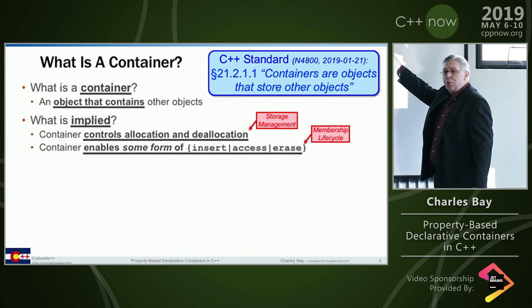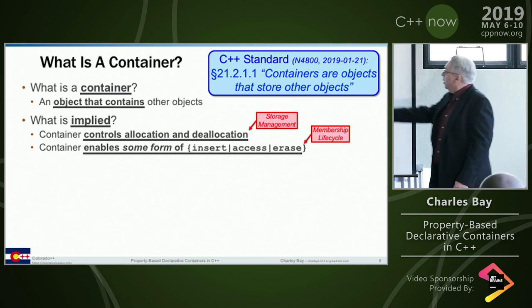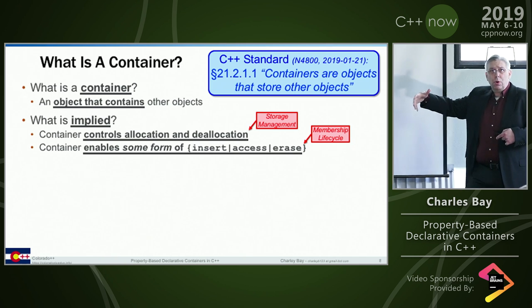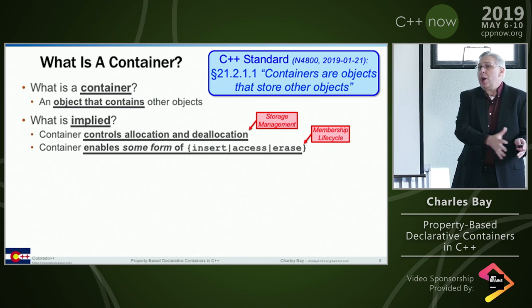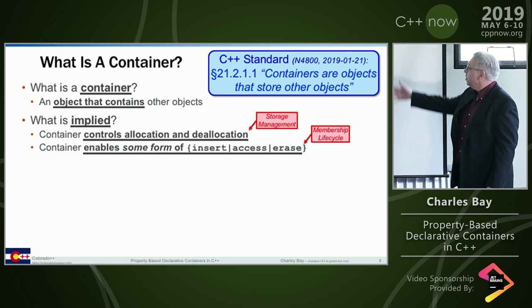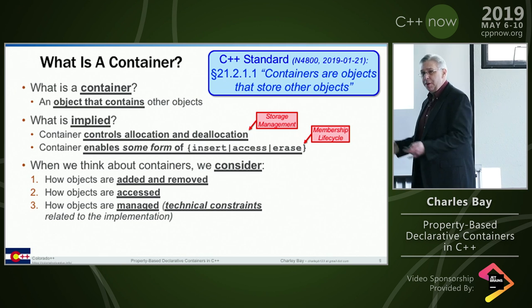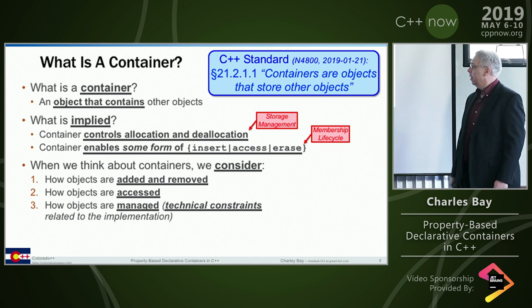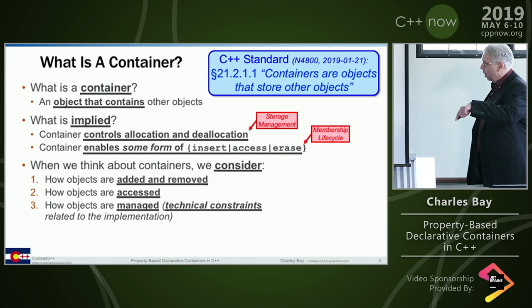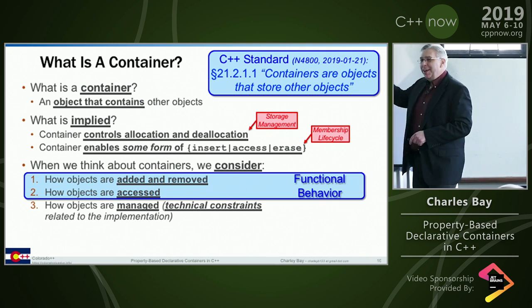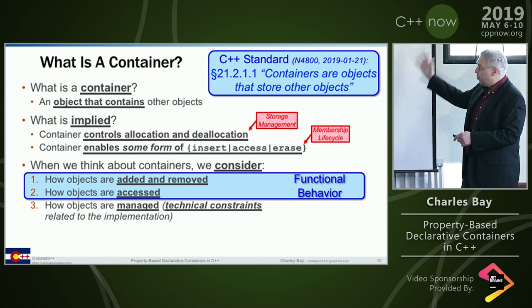We have computer science ways - Big O complexity - to address memory, for example. Different containers are going to have different constraints. When we think about containers: I want a container so I can put stuff in there, get stuff out of there, and interrogate what's in it. We're accessing, managing lifecycle, and dealing with technical constraints of the container itself. We're going to contrast functional behavior and non-functional behavior - this is well established, not new.